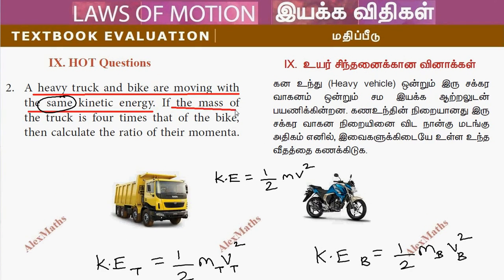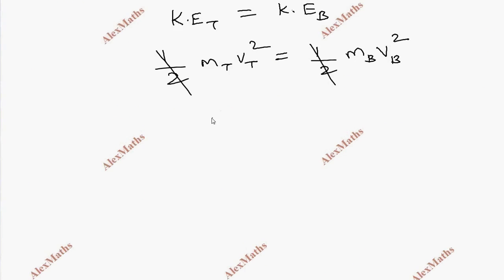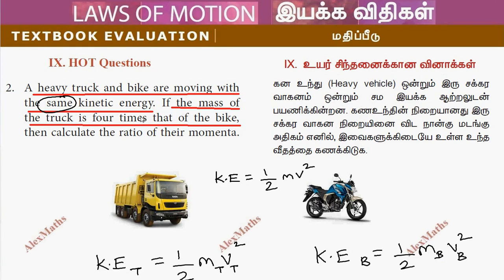Mass of the truck is 4 times that of the bike. So mt equals 4 times mb.